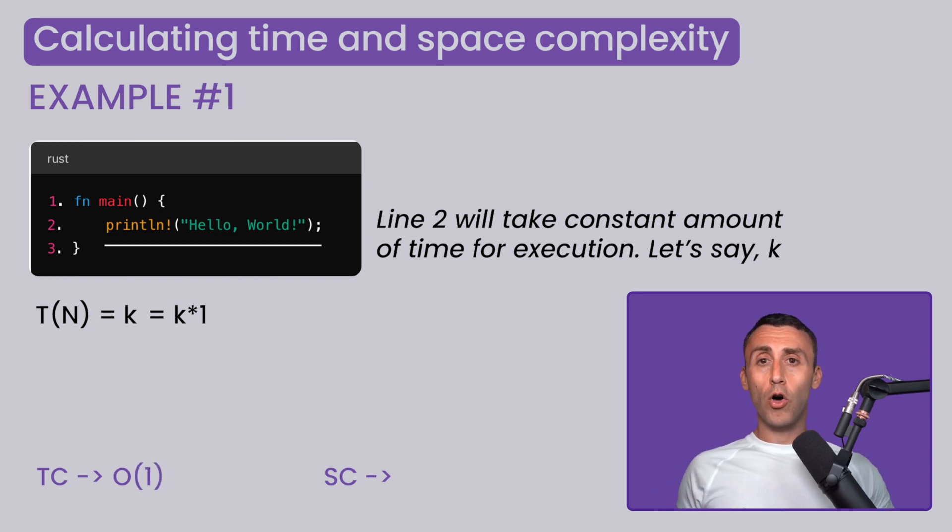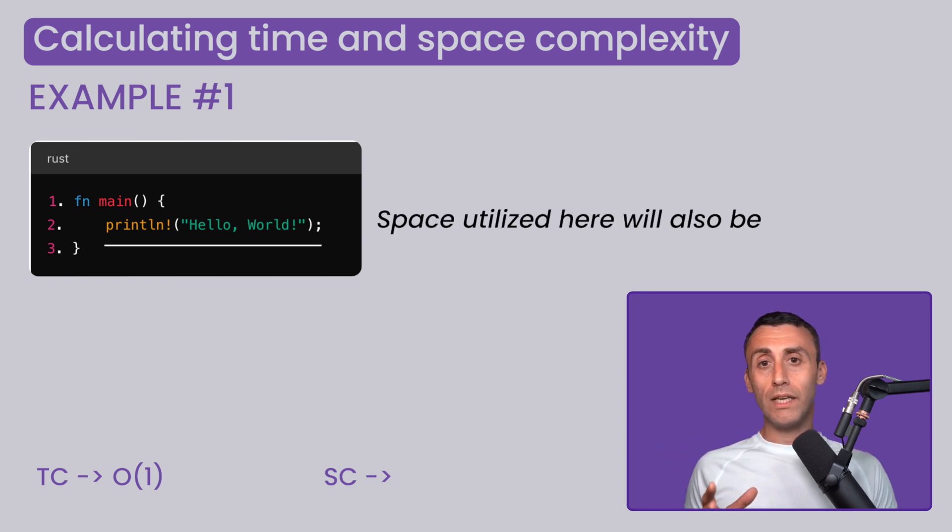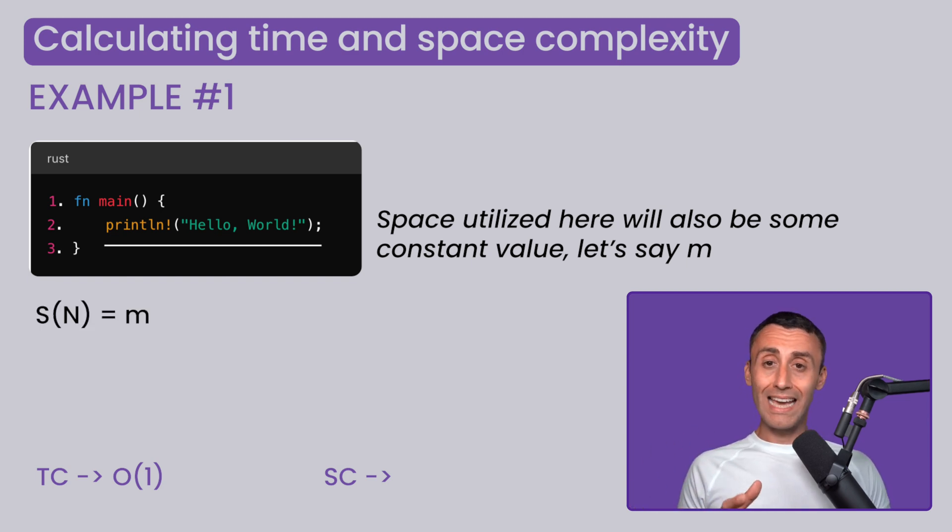Now let's move on to understanding the space complexity. The space in memory used here will also be some constant value. Let's say m, so S of n equals m. Again, this is independent of the input size. So the space complexity will also be S of n equals big O of 1.